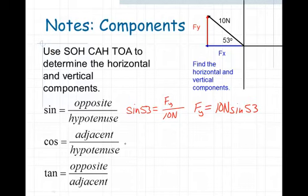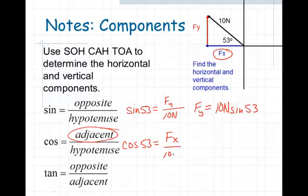Similarly, let's do that with the cosine. With the cosine of 53 degrees, we will take the adjacent side. The adjacent side to that angle is right there at f sub x, so that value is f sub x. I'm going to divide that by the hypotenuse of 10 newtons. Cross multiplying, f sub x will equal 10 newtons times the cosine of 53 degrees.